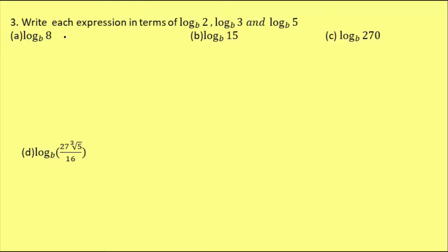Number three: write each expression in terms of log 2 base b, log 3 base b, and log 5 base b. So log 2, log 3, log 5 base b — this is the case, in terms of log 2, log 3, log 5 base b.